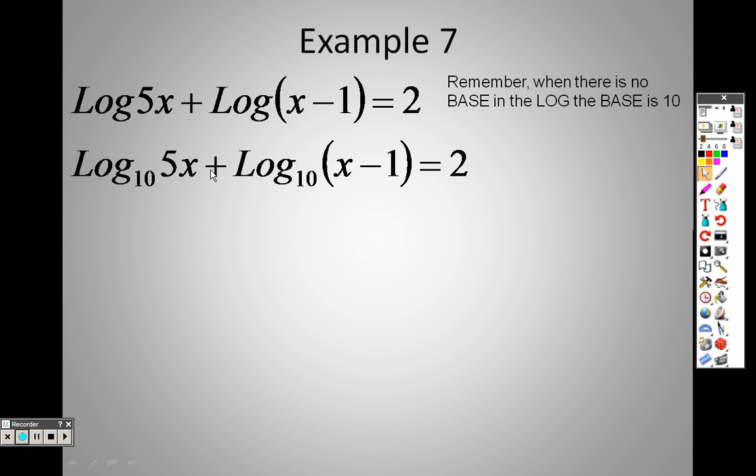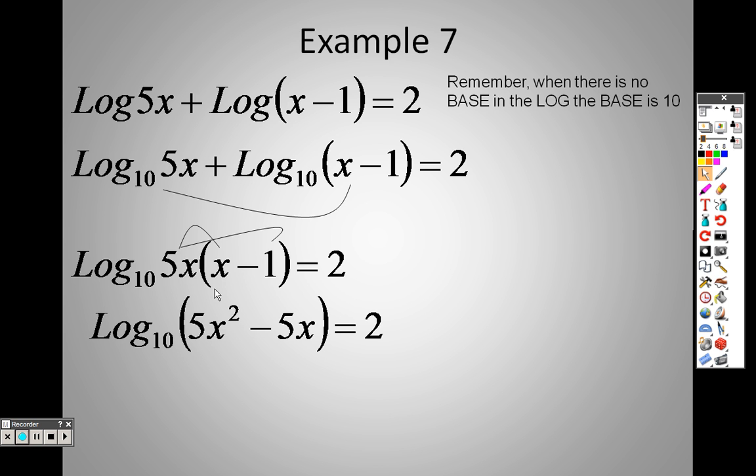But anyway, now looking at it after realizing that the base that's not there is 10, with that addition sign, according to our properties, I can put that together through multiplication, and then I can distribute that 5x through, get 5x squared minus 5x.